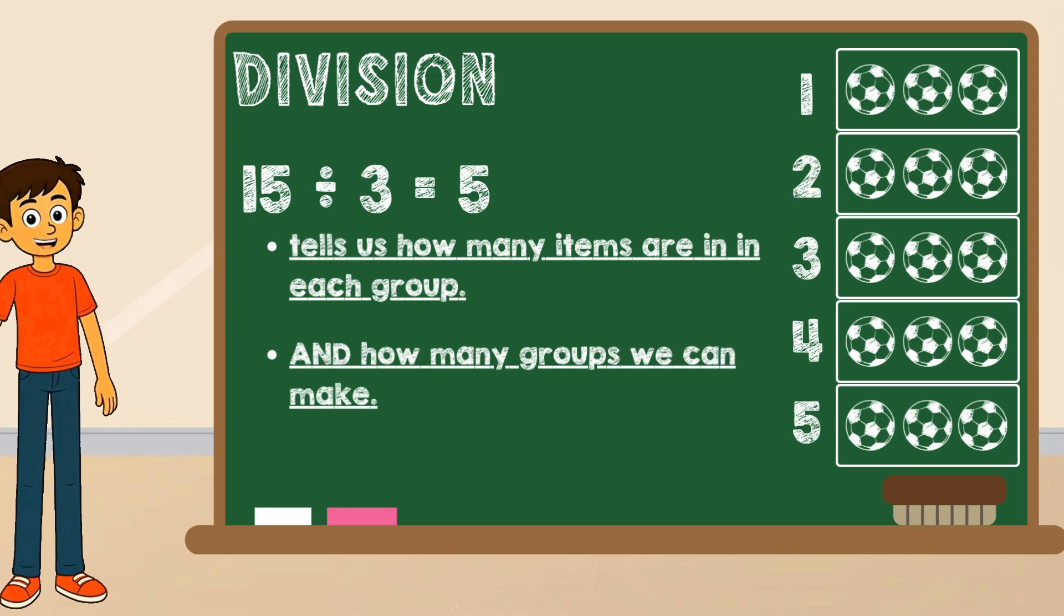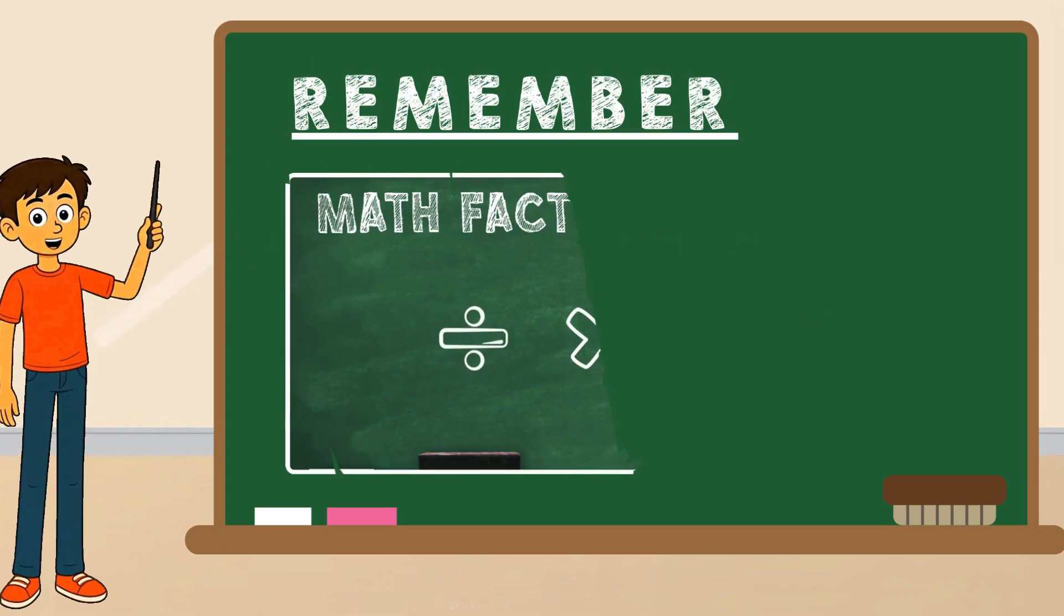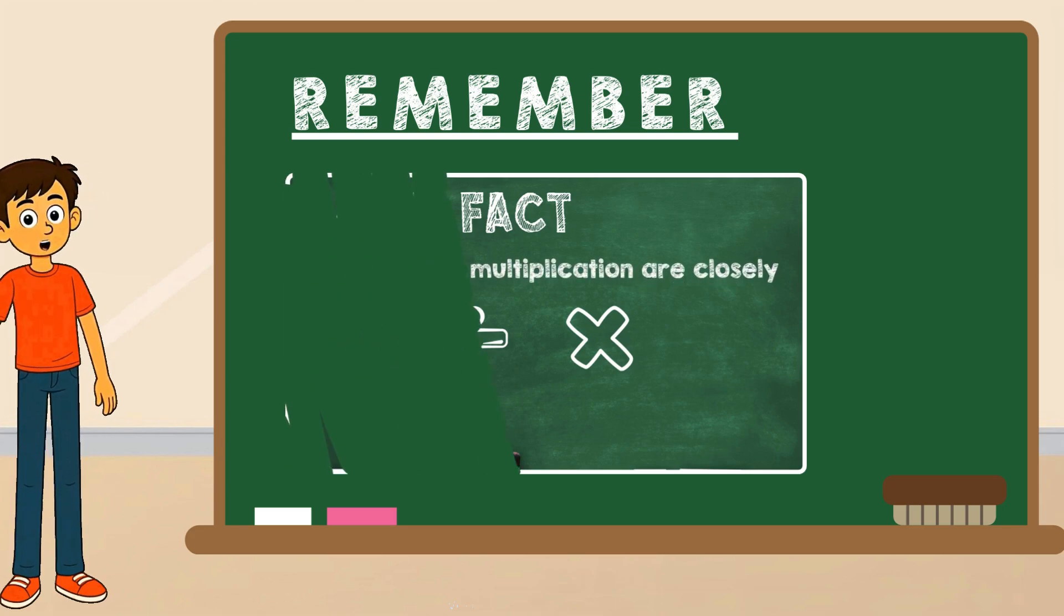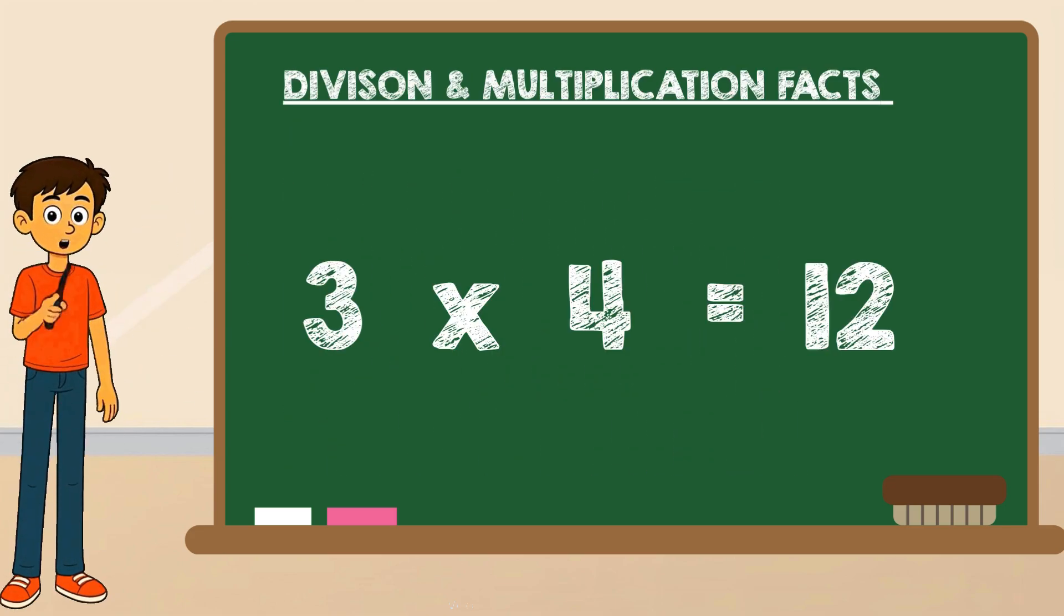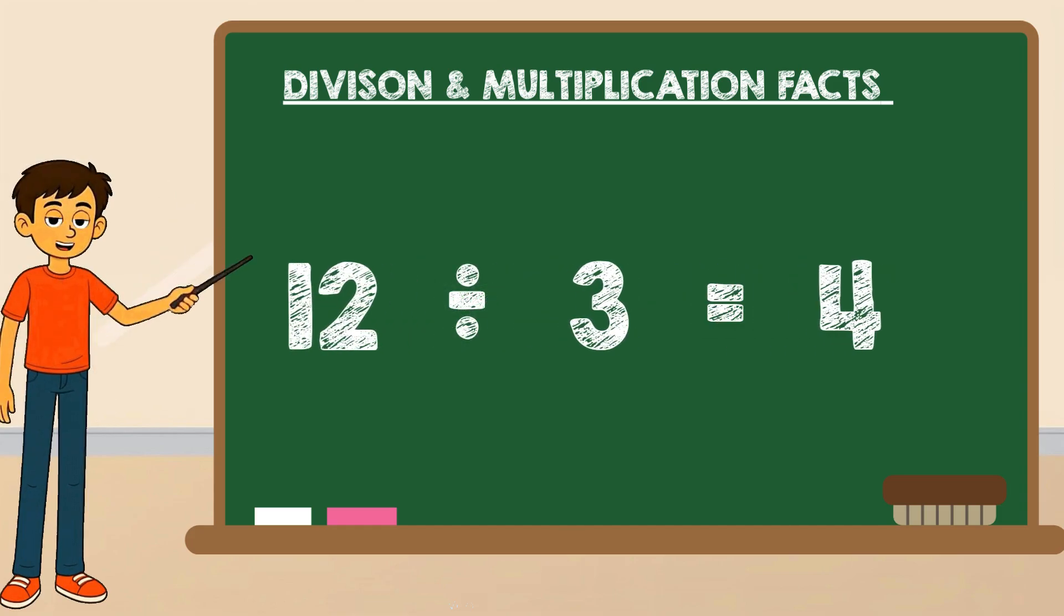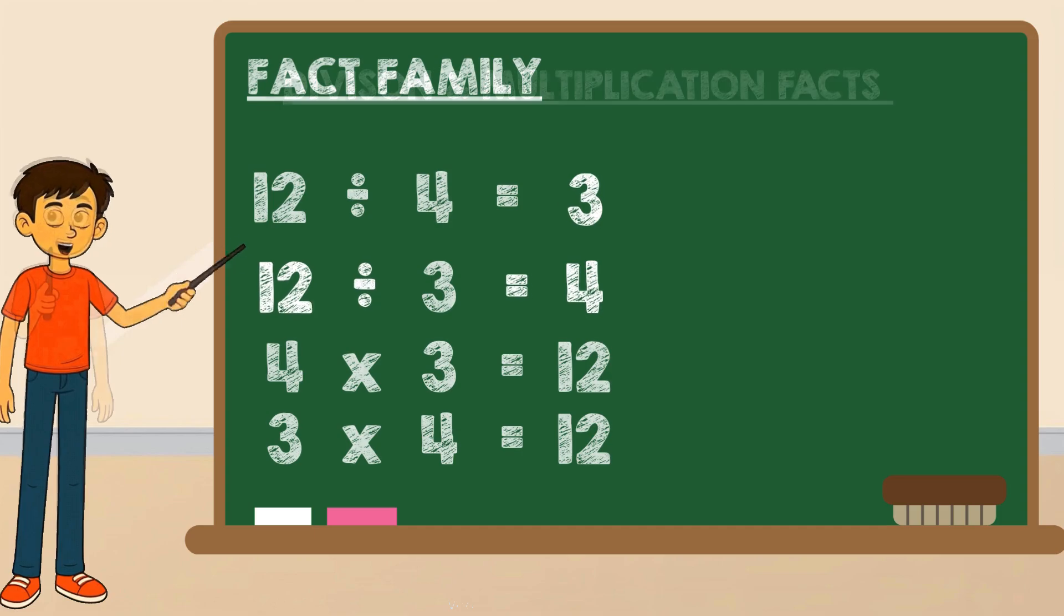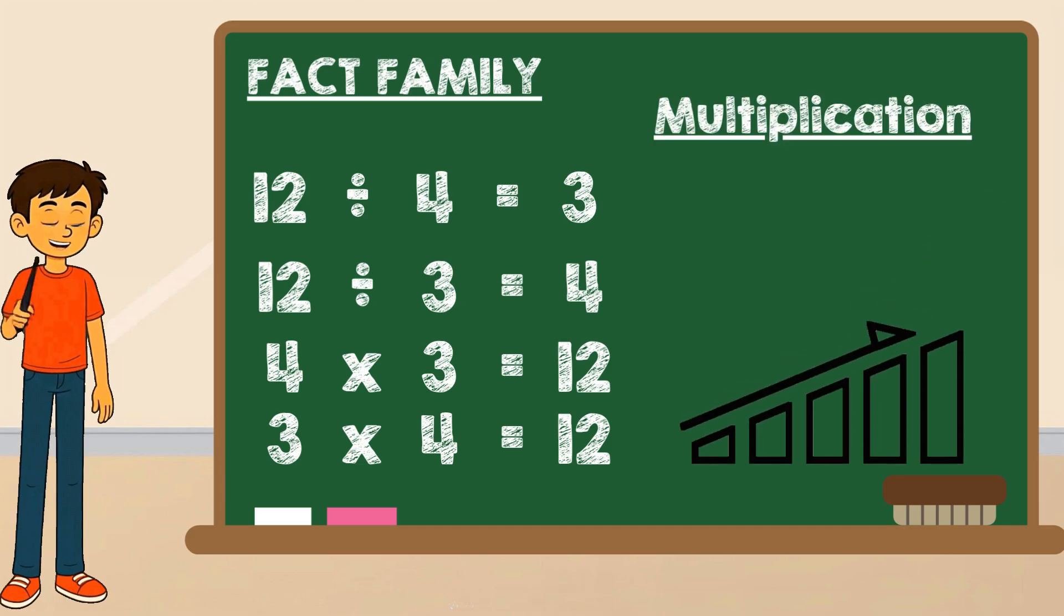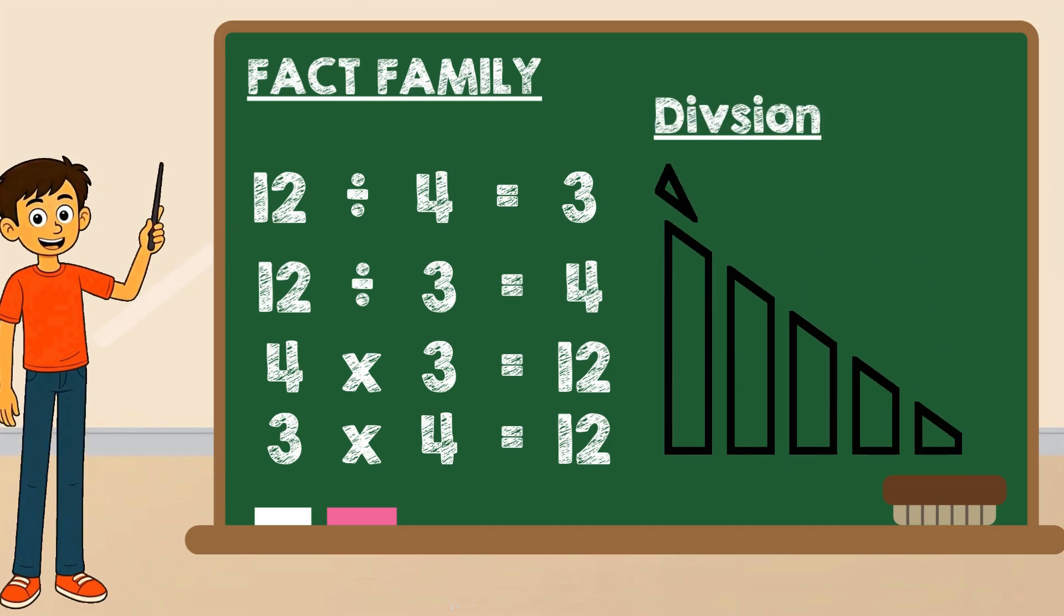Remember how we said multiplication and division are best buddies? They work together. If you know that three times four equals twelve, then you also know that twelve divided by three equals four and twelve divided by four equals three. Those four facts are called a fact family. If you know one, you know them all. Multiplication builds up and division breaks down. They always stick together.